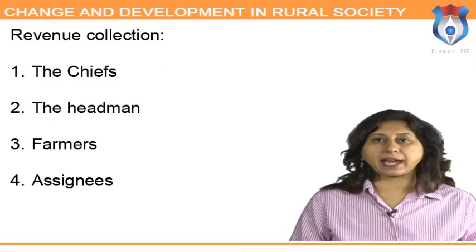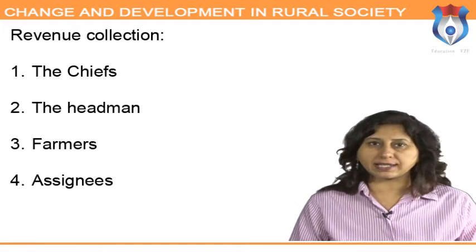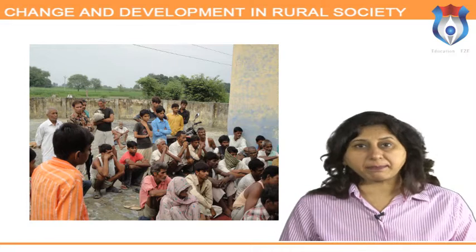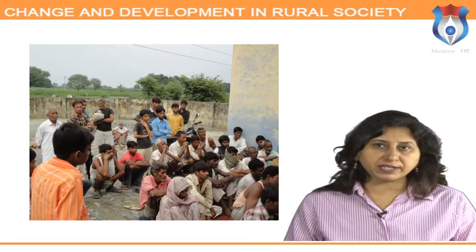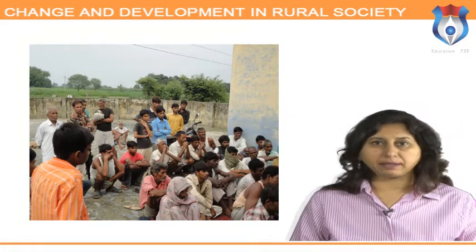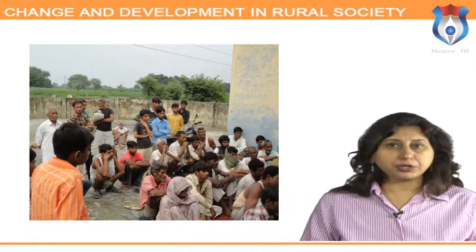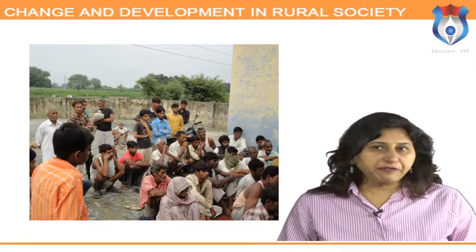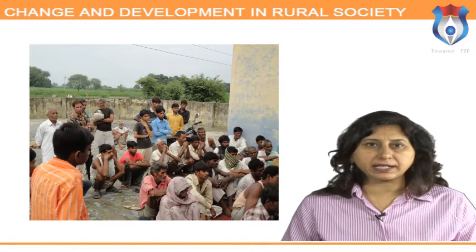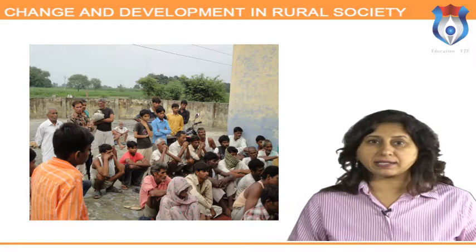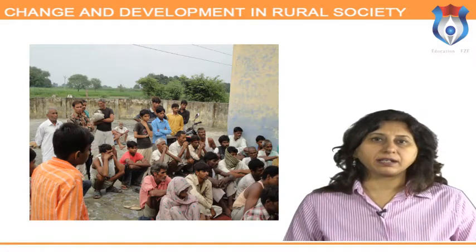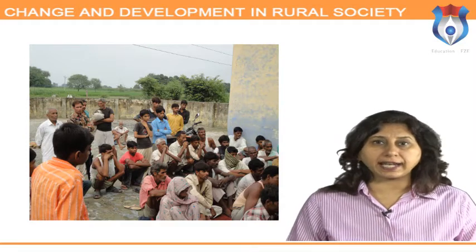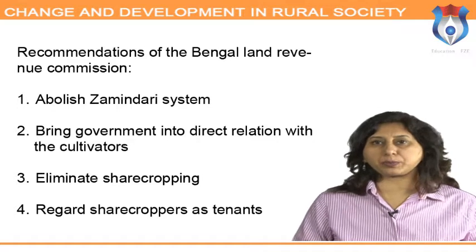The task of revenue collection was assigned to intermediaries broadly divided into four classes: the chiefs — Hindu chiefs who had some claim to sovereignty but submitted to Muslim rulers by paying a fixed tribute; the headmen — village headmen with whom revenue assessors came to terms for the revenue to be paid by the village as a whole; farmers — who agreed to pay a lump sum to the state but collected more from peasants for profit; and assignees — important officers who took over administration including assessment and collection of revenue.